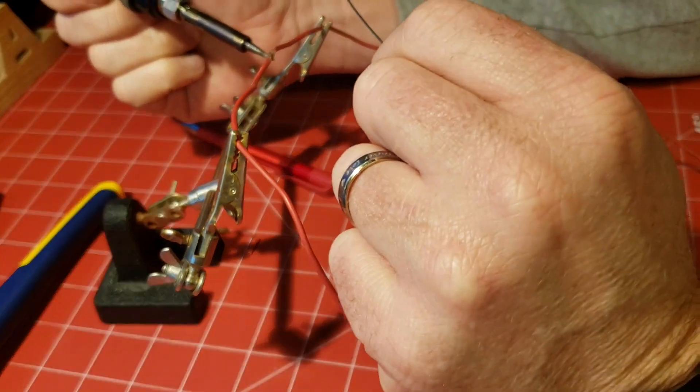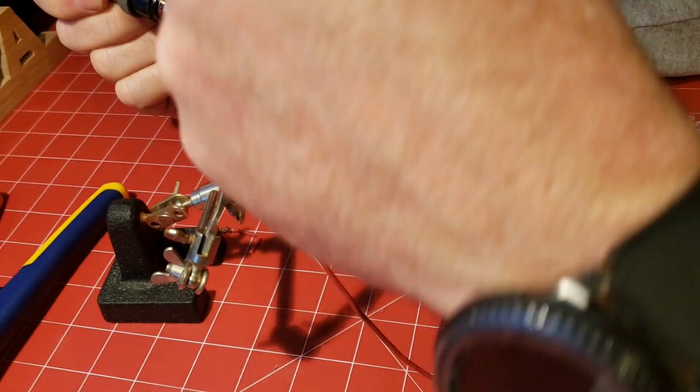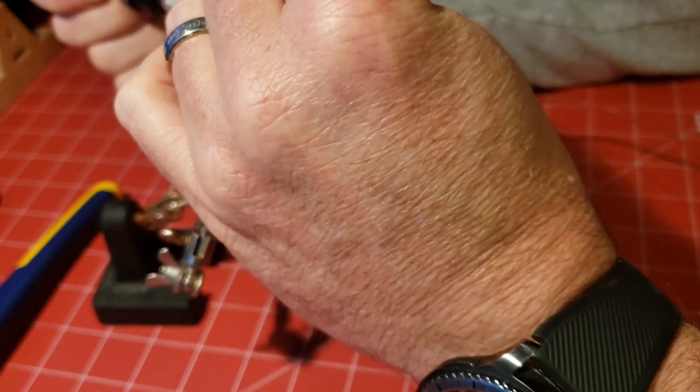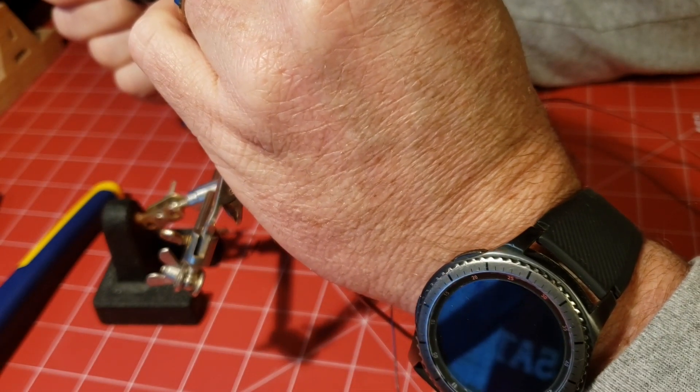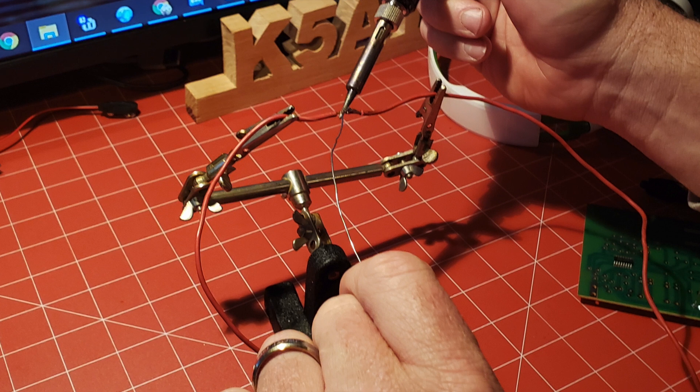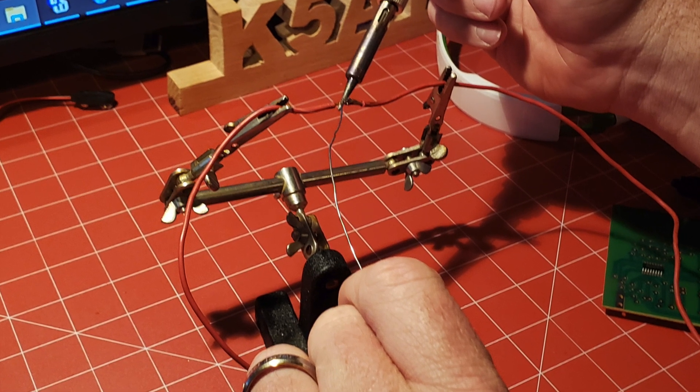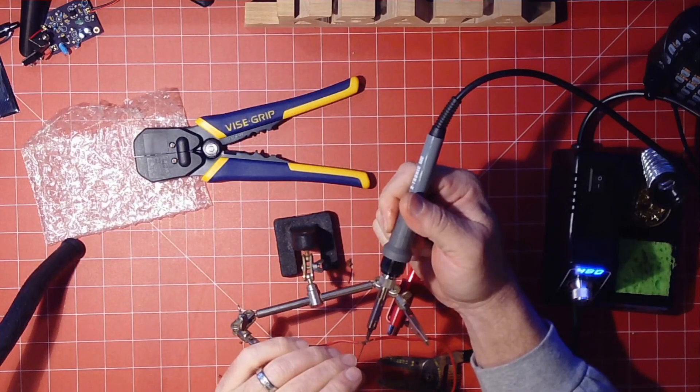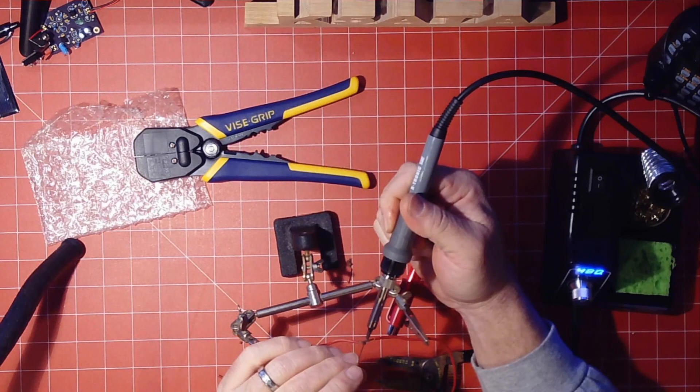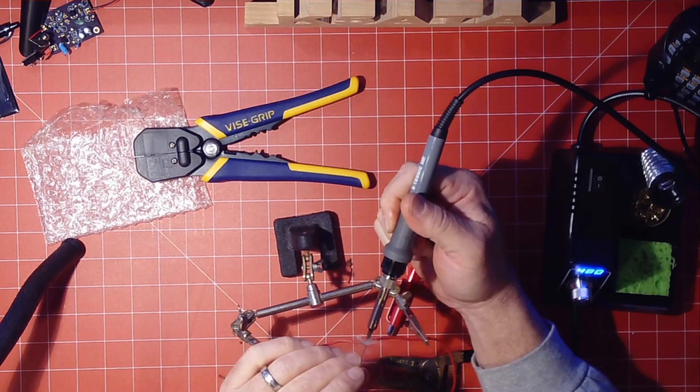And it's the same general idea. You start heating it and you touch the solder to the other side. You can see that smoke coming off. That's actually the rosin and stuff in the flux.